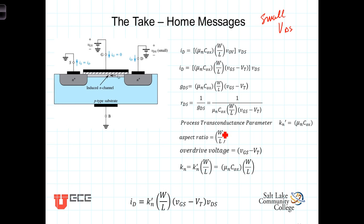We defined this process conductance parameter, k sub n prime, which was just the mobility times the capacitance. We defined the aspect ratio of the width over the length of the channel.